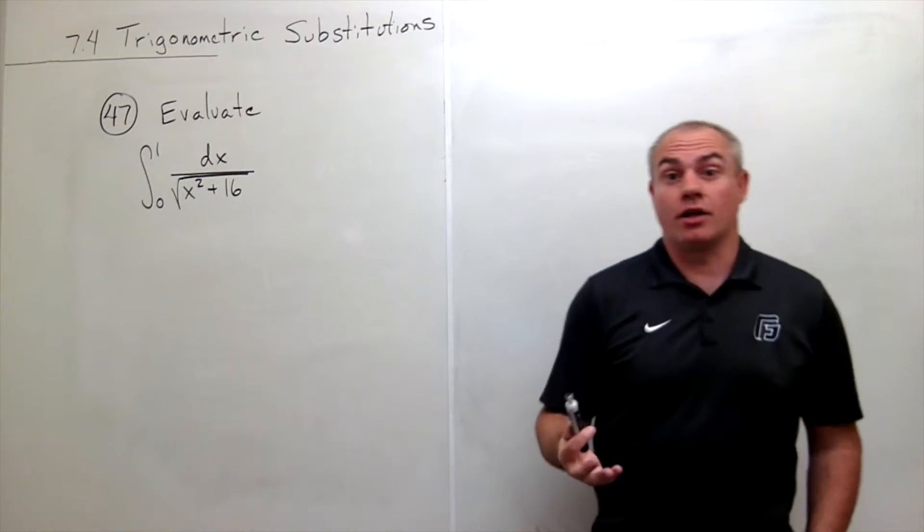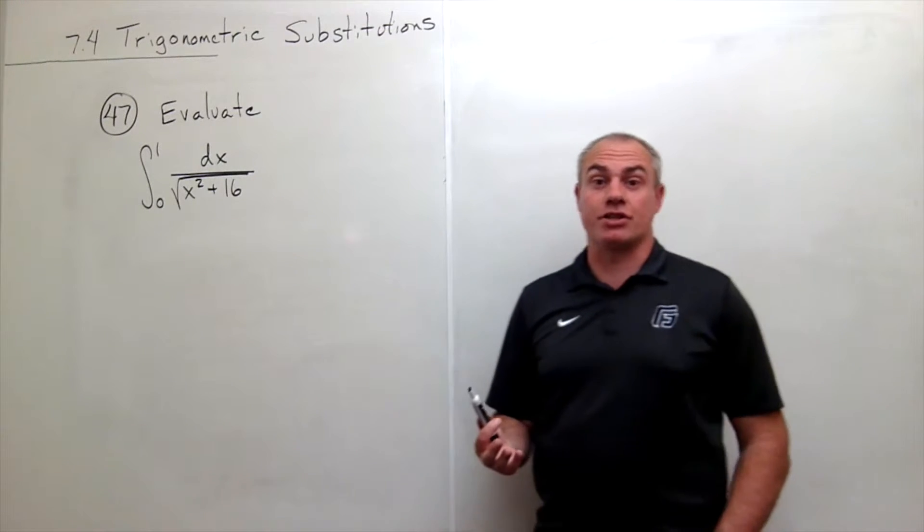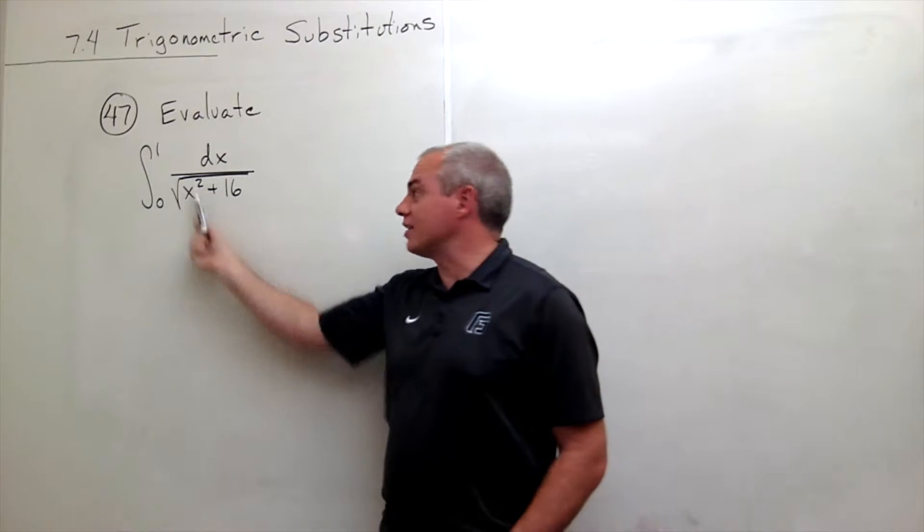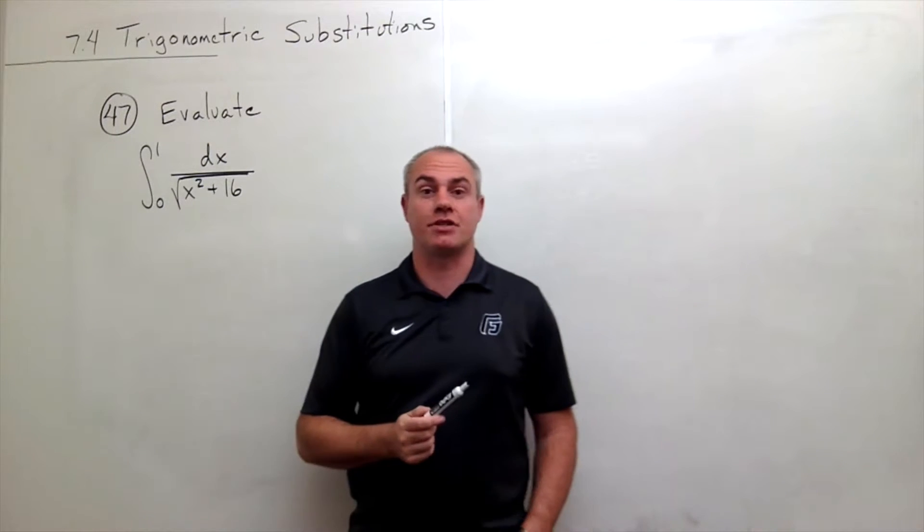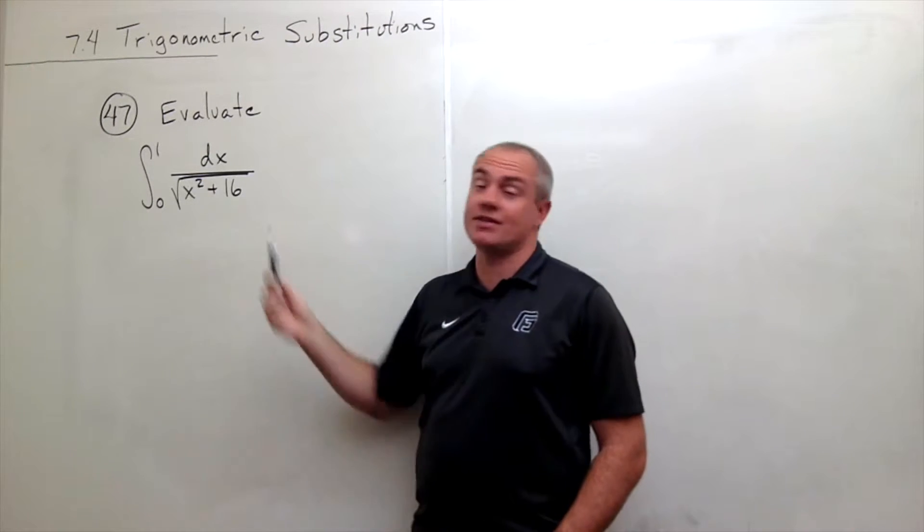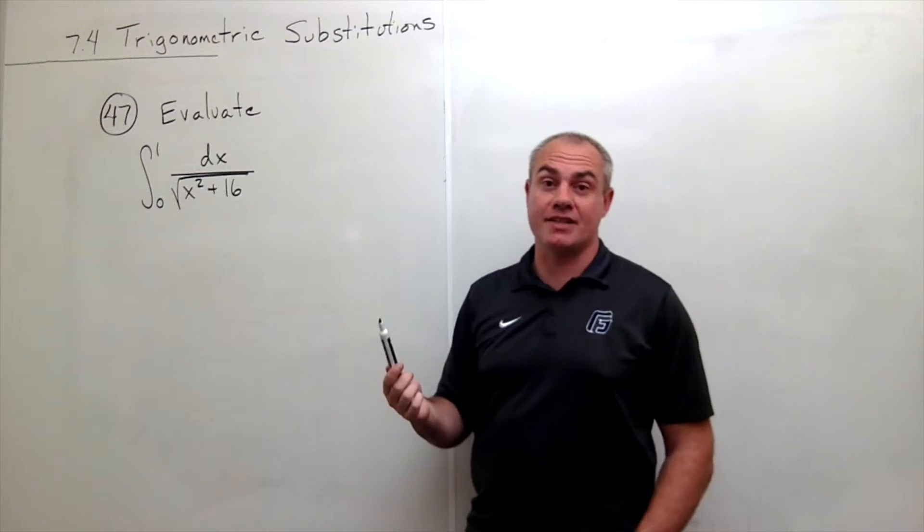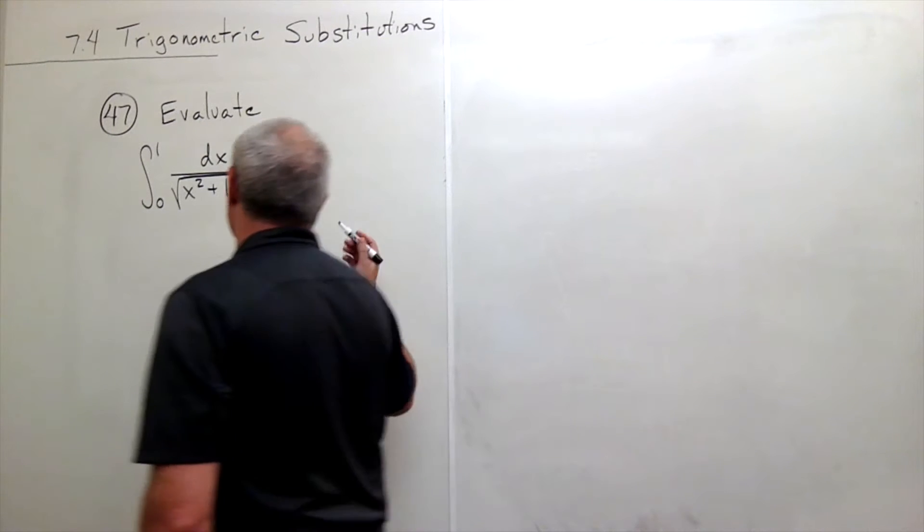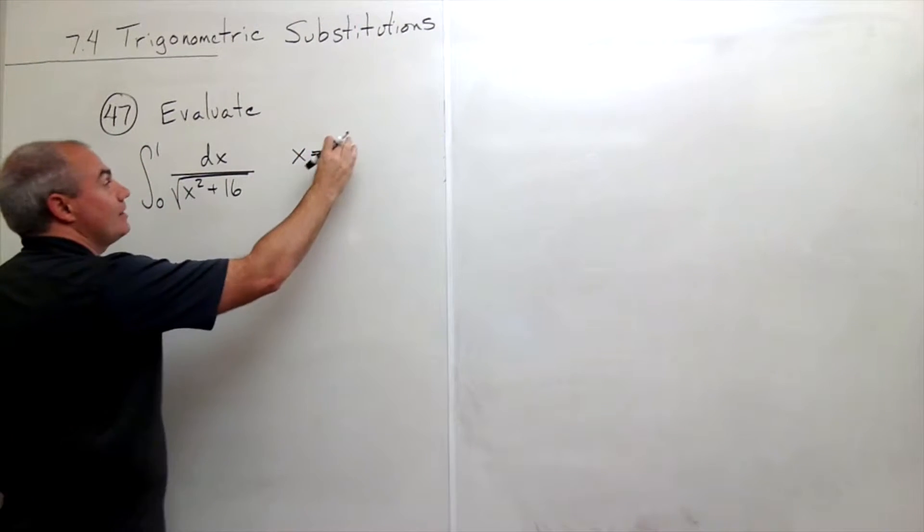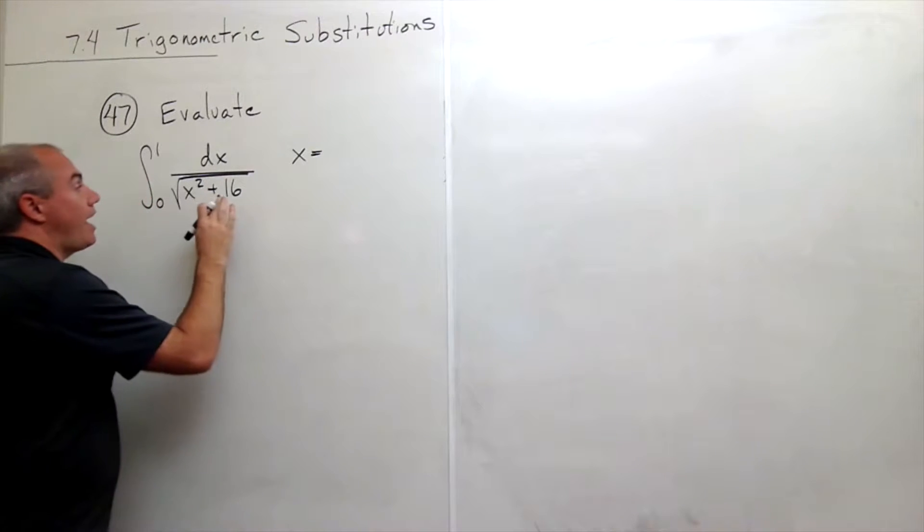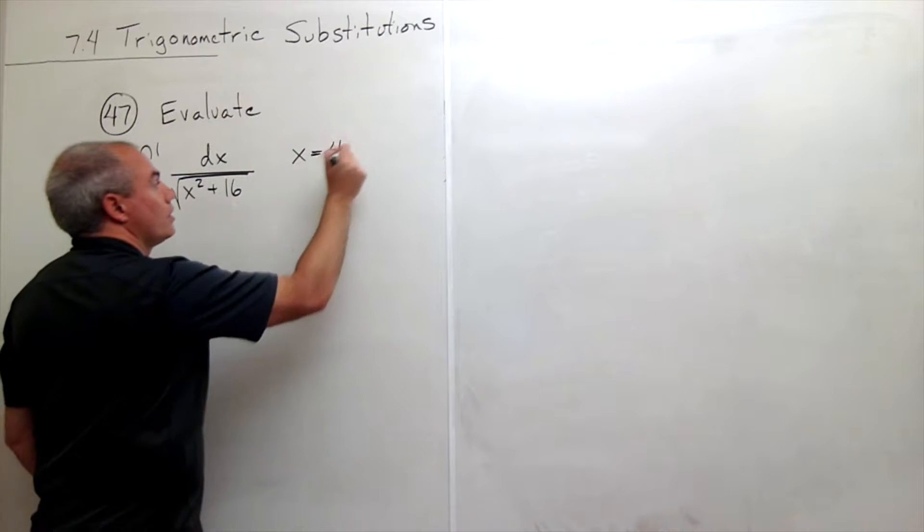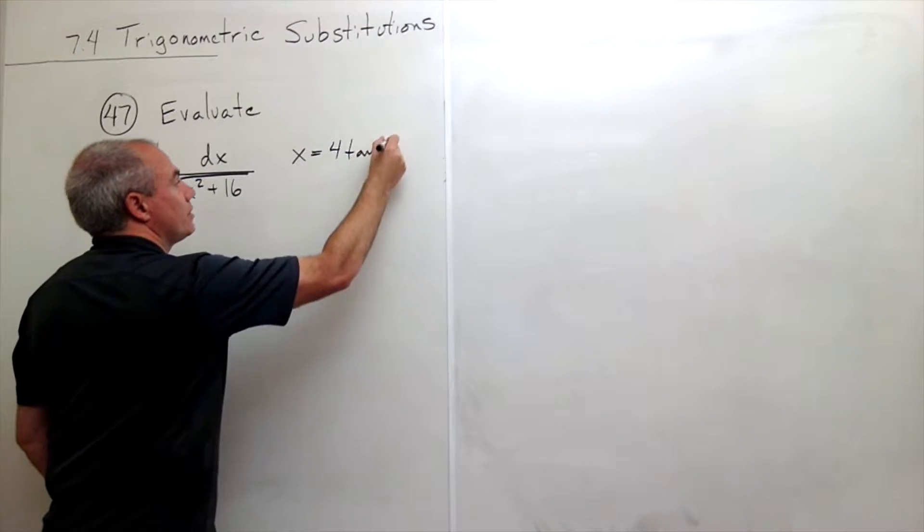As in all other trigonometric substitution problems, the first question I should ask is what is the form of this trig substitution? The form here is x squared plus a squared, and x squared plus a squared gives me a substitution that looks like x should be a tangent theta. A in this case is the square root of 16 or 4, so we get 4 tangent theta.